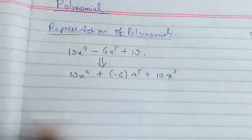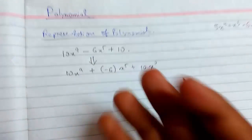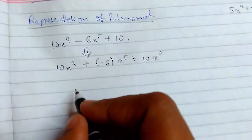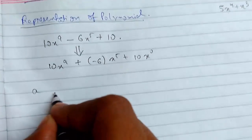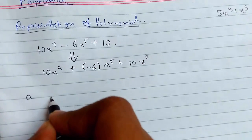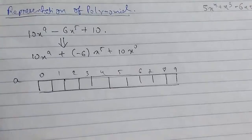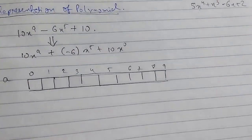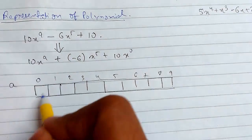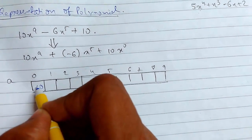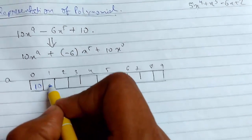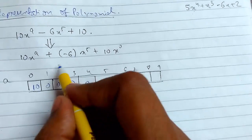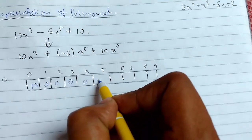Suppose we think: why can't we represent this in an array? We can do that, but there are some restrictions. Suppose we have an array A. We want to put the values in the array, so we will put 10 here and all the other spaces must be set to 0. For exponent 5, the coefficient is minus 6.